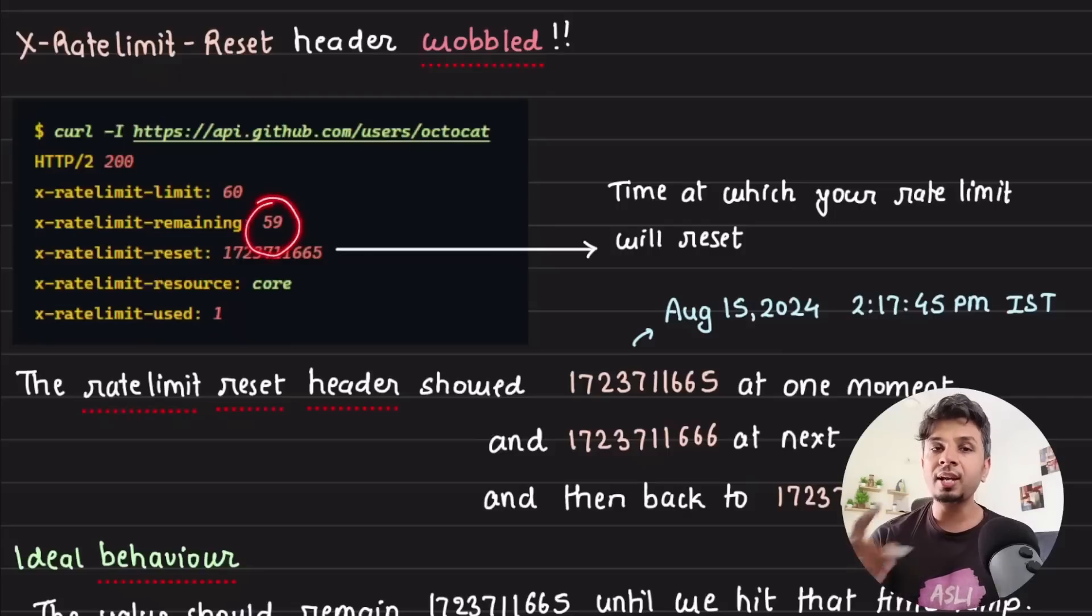Here it says that I have a total of 60 requests that I can make in an hour, 59 of them are remaining because one has been just consumed, then my rate limit will reset at this time—this is an epoch timestamp. My rate limit will reset at this time. So I literally tried this today. Today's 15th August. 15th August, 1:17 is when I made that API request, my first API request, and I got in response this time, which is 2:17:45 PM IST, 15th August 2024.